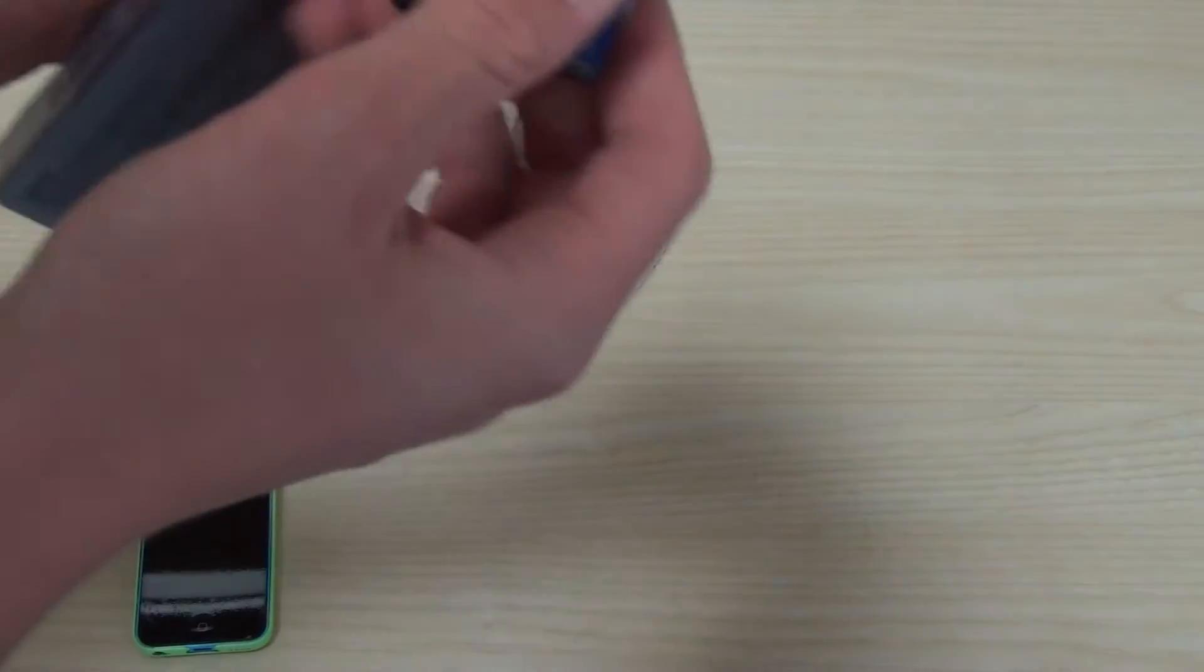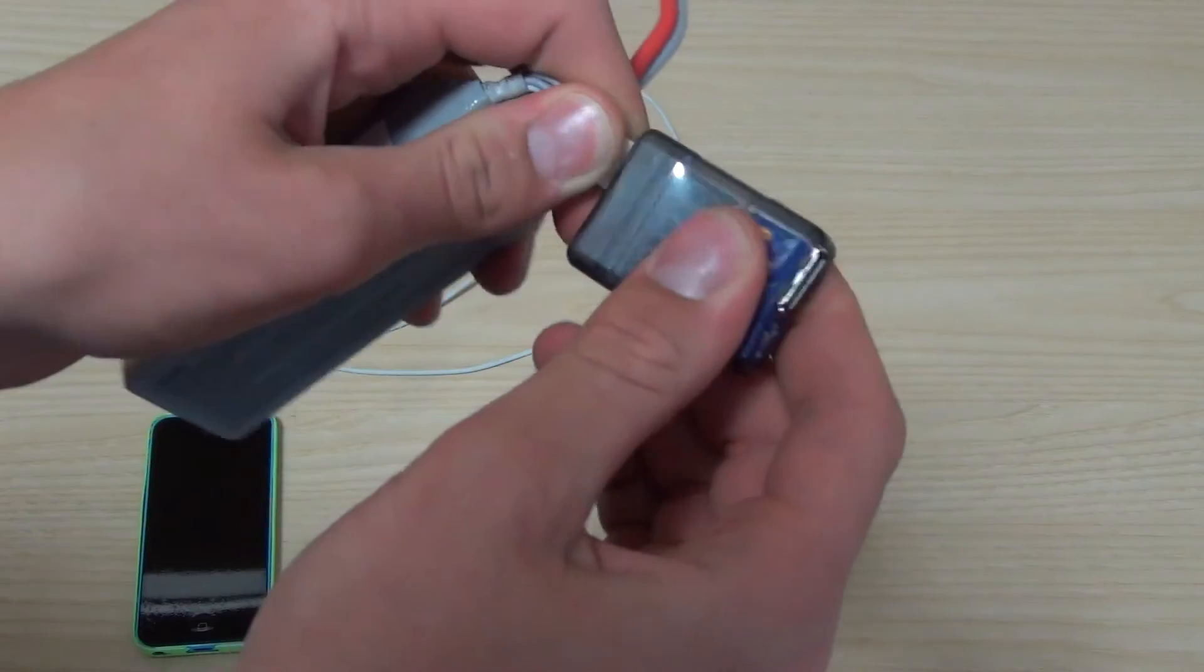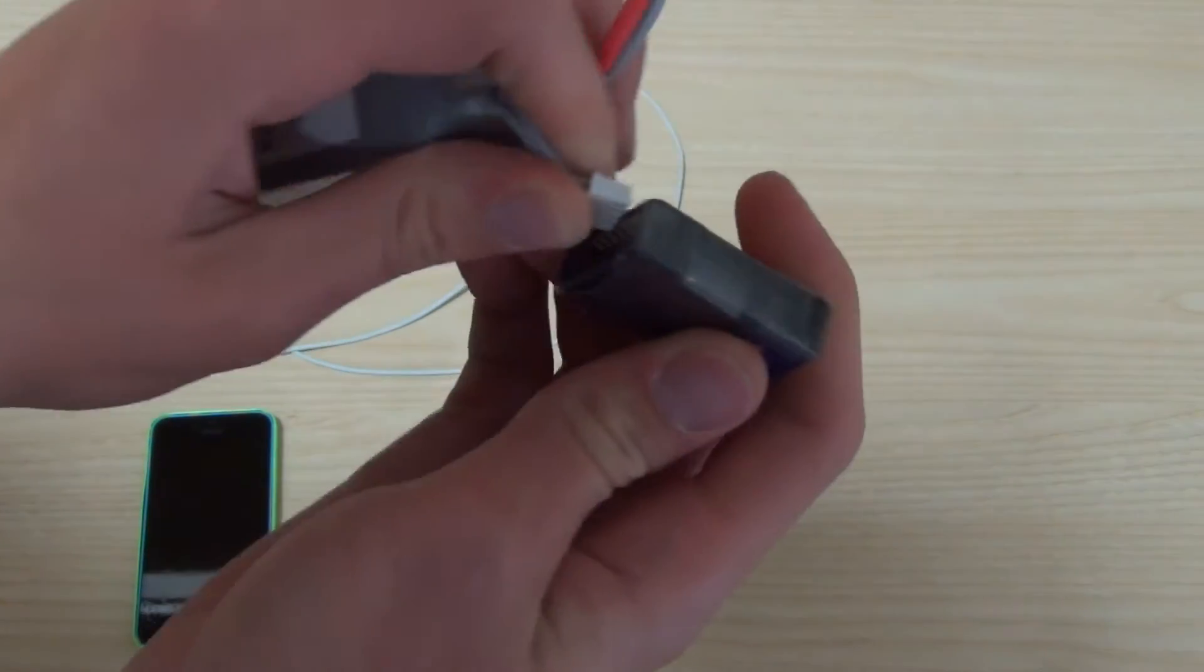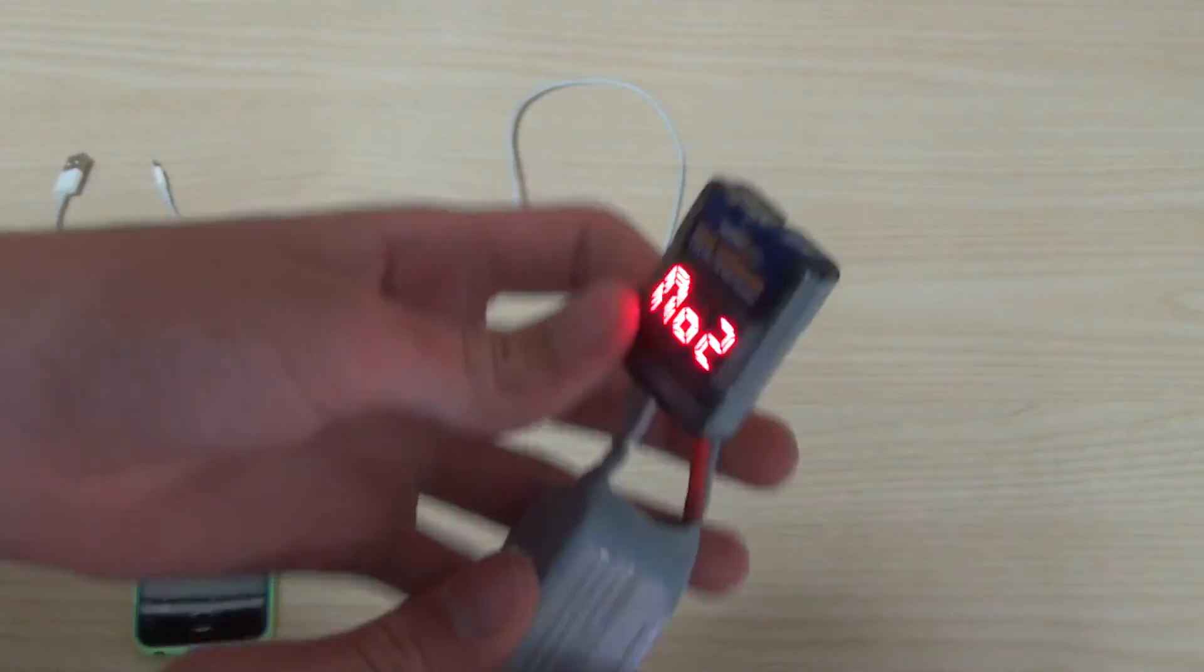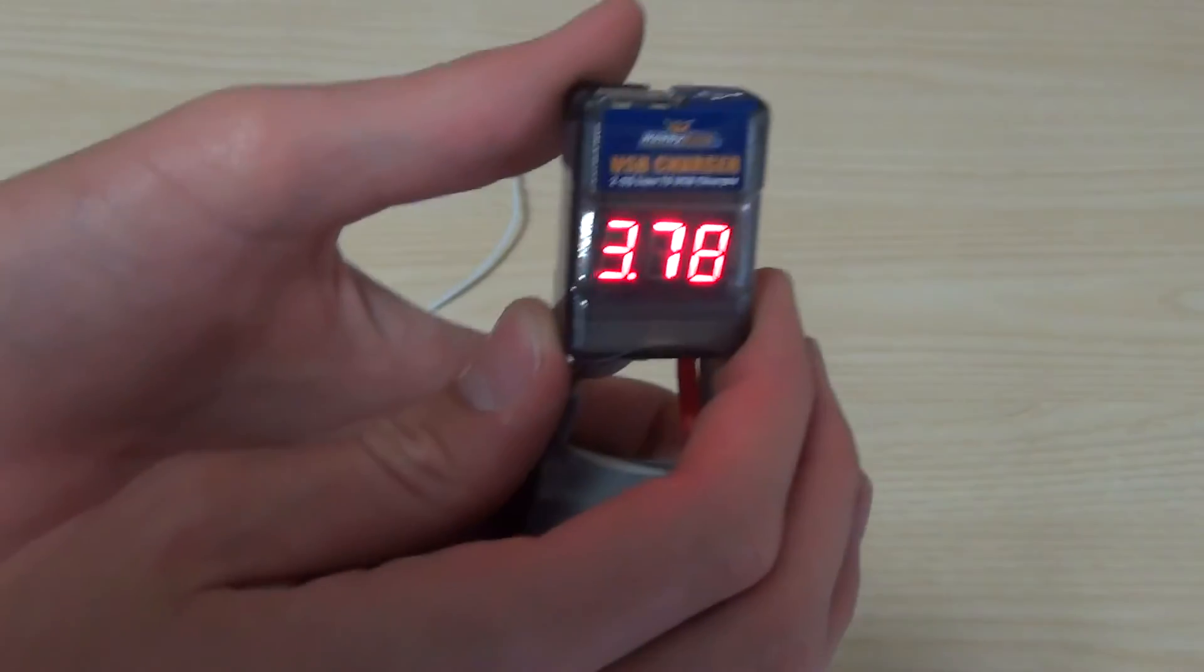So first what you just do is you get your battery, you plug it in the bottom. This is a bit fiddly I found, but it goes in if you just sort of shove it in. Then it says, basically it just cycles through all of it.